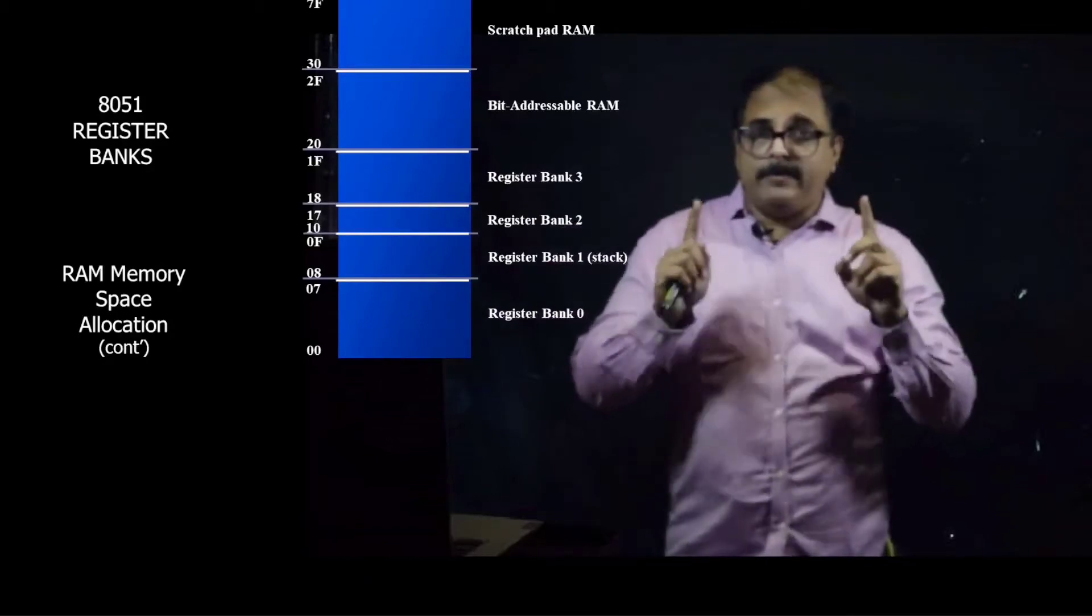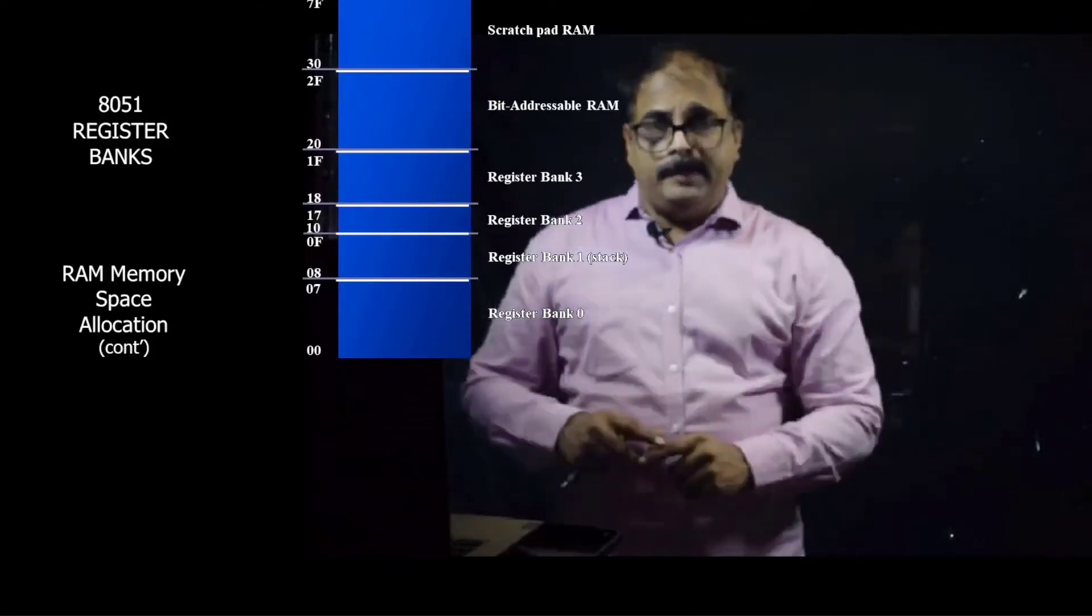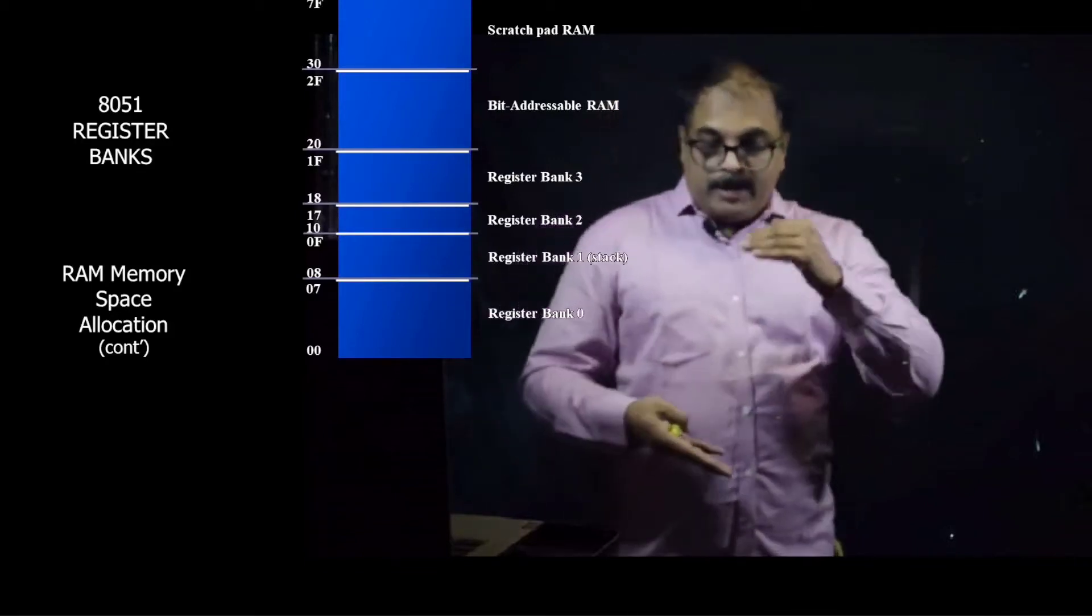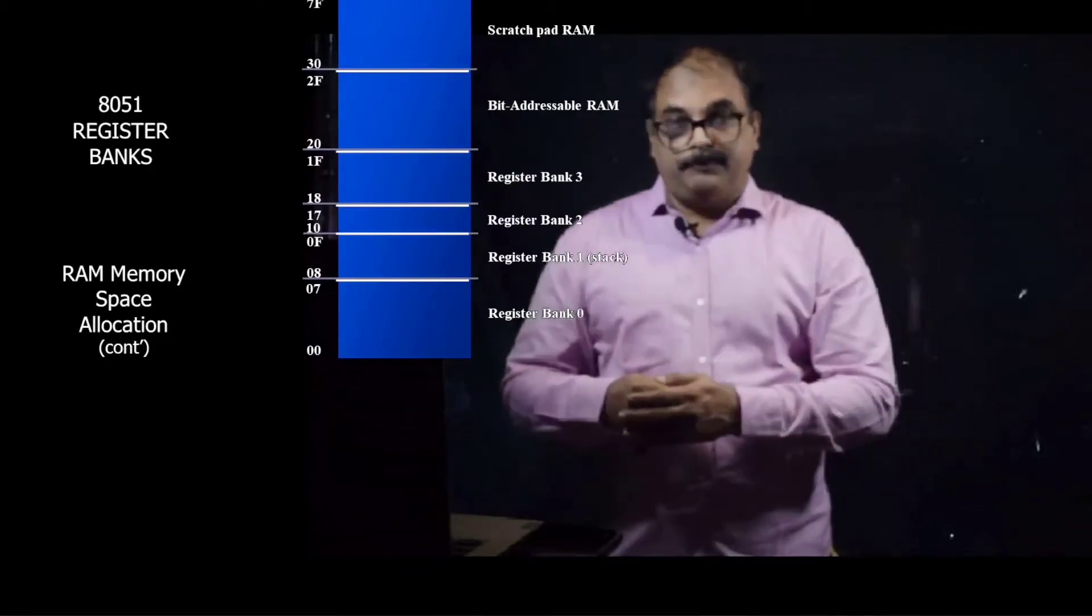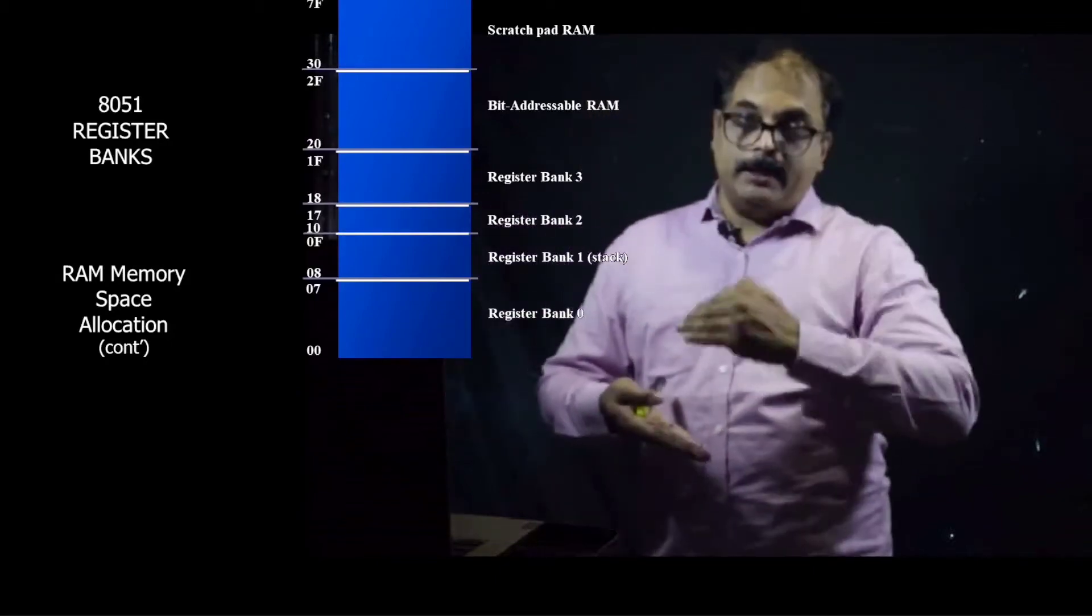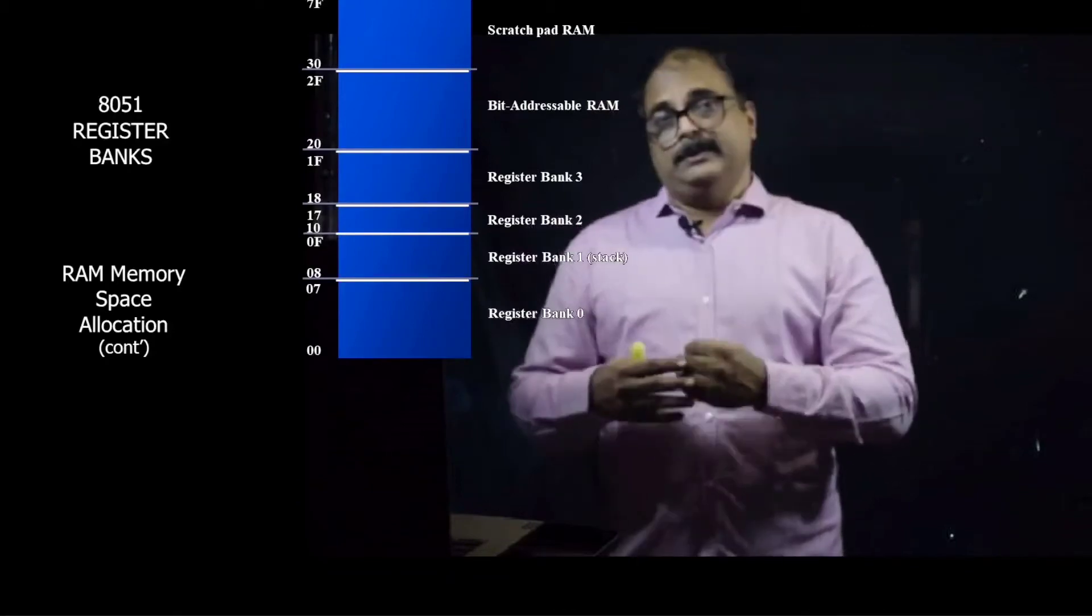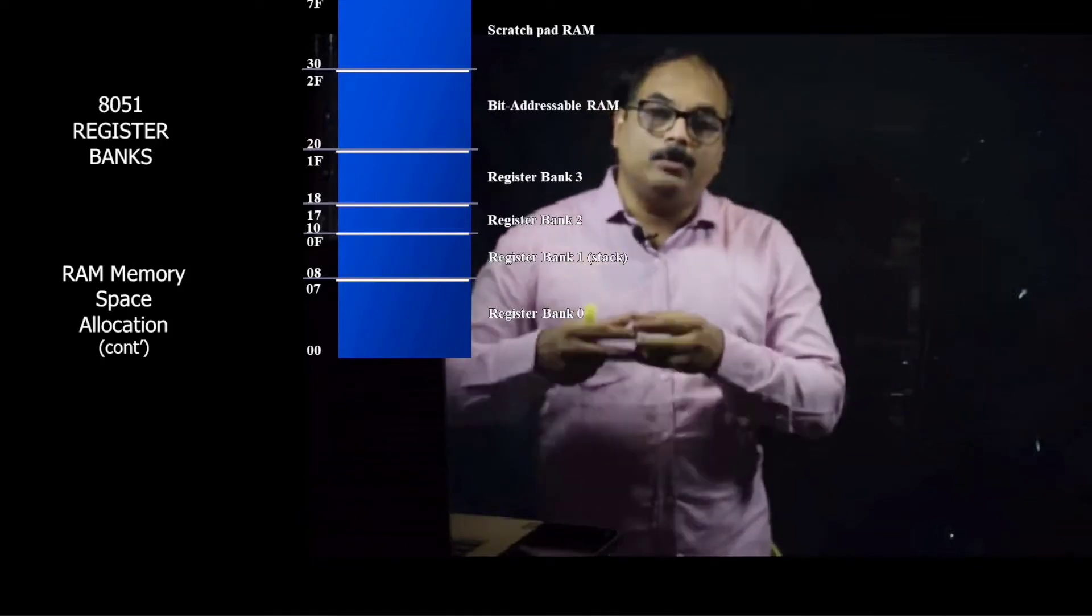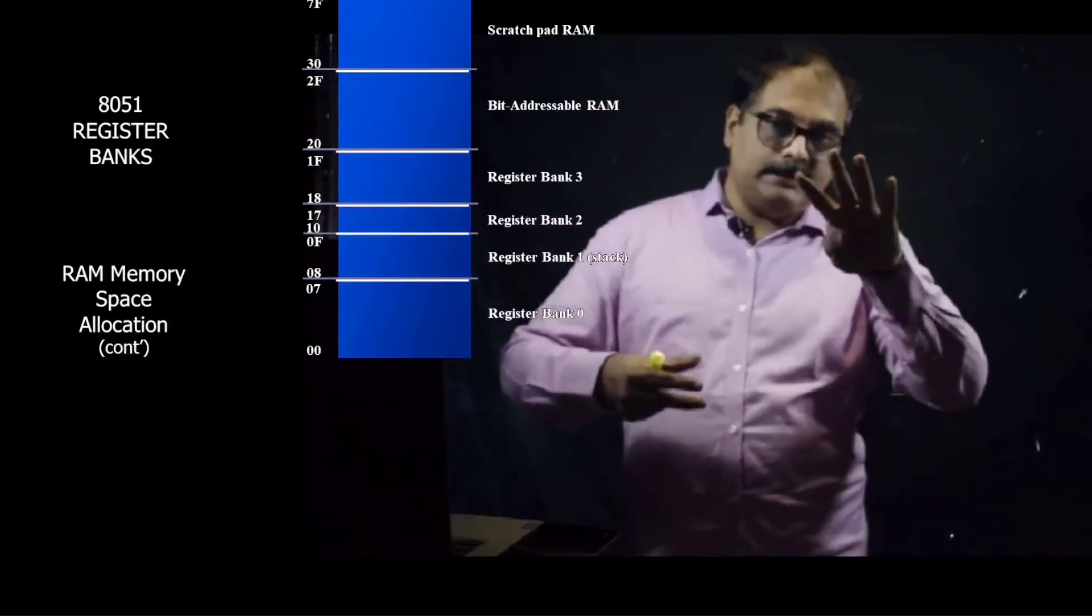There are 128 bytes or 128 registers of 8-bit length which are actually termed as RAM. Out of these 128 byte registers, the first 32 registers with addresses from 00 to 1F are divided into four register banks. In case of 8051, eight registers are clubbed together and we call these registers as a bank.